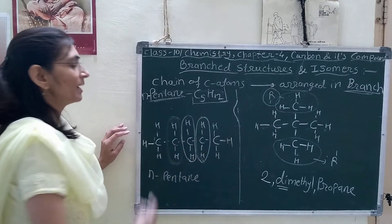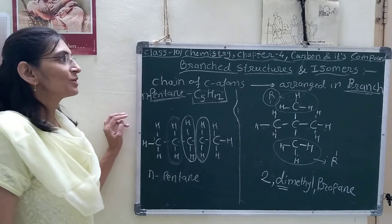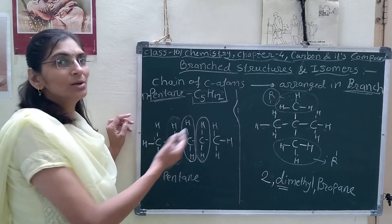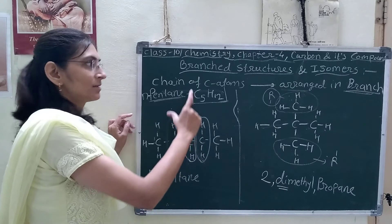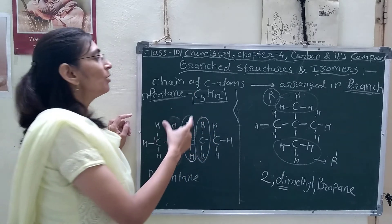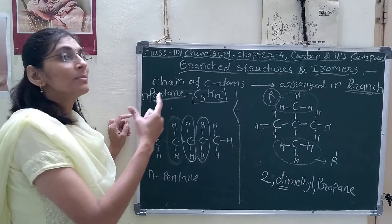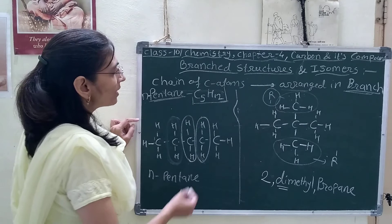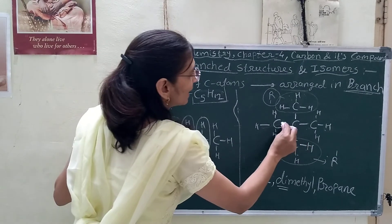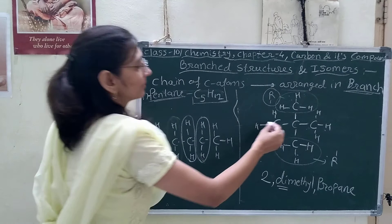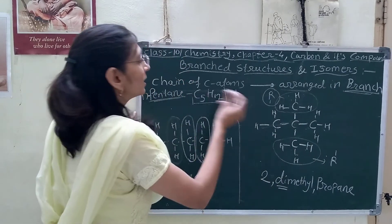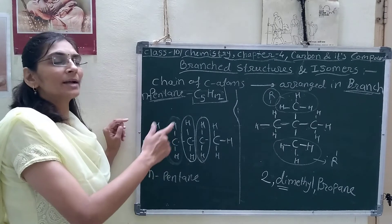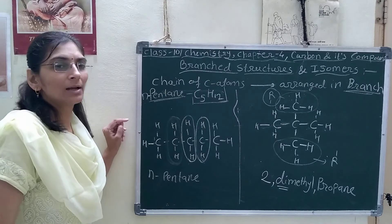These are the two isomers of pentane we have seen. We can draw the isomers of hexane also — I will give notes of those structures and show how to take out branch structures or isomers of hexane. For double and triple bonds also we can give isomers and draw branch structures, but it is not necessary for your 10th standard — you will learn it in further classes.